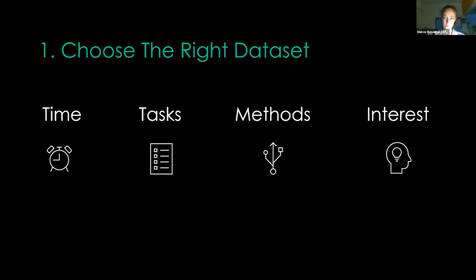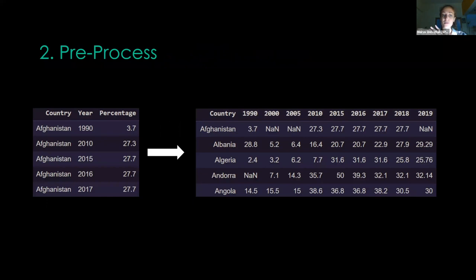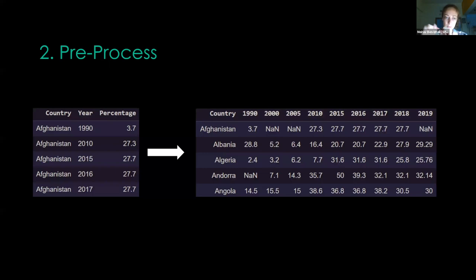Second tip is to preprocess. Even if you want to spend minimal time organizing the data, don't skip this part. In my case, I was interested in the temporal patterns of female representation in parliaments worldwide. So the first thing I did was convert my data to a time series format, which made it very easy to look at patterns, deep dive into specific years, and see the differences between decades. Other options for rearranging could be converting data to graph format, aggregating, or merging with other data sources. Use your imagination and have fun.